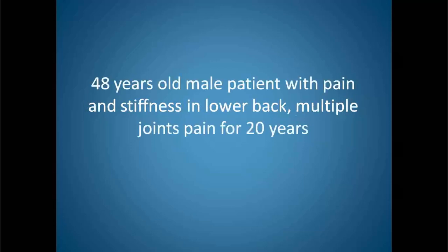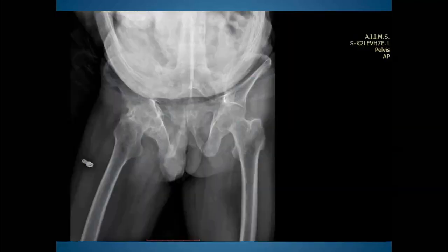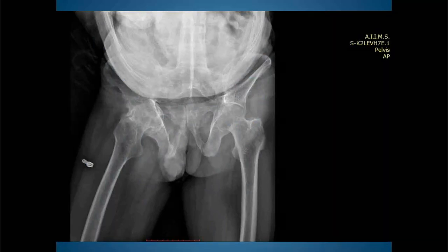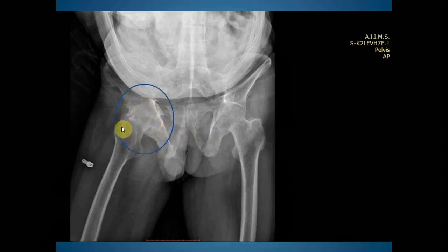Let's start with a case. This is a 48-year-old male who presented with pain and stiffness in the lower back and multiple joint pain for 20 years. This is the AP radiograph of the pelvis. We can see there is decreased bone density, osteopenia involving almost all the bones visualized, and bilateral protrusion acetabuli. There is bony ankylosis involving the right hip joint.